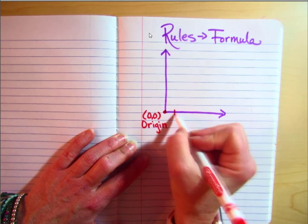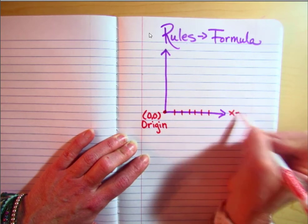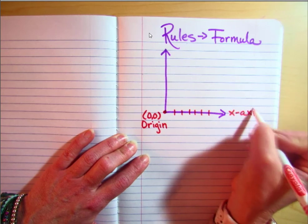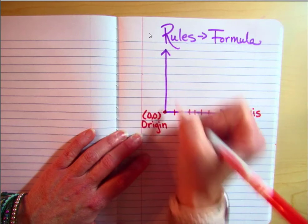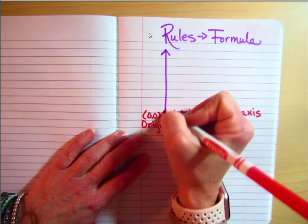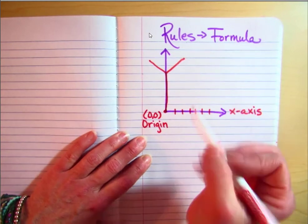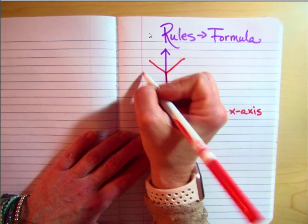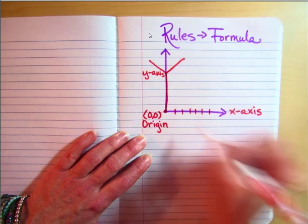Along this line here, this is your x-axis, and this one is your y-axis. I always remember like if you drew it up like this, I could make a big Y with your y-axis. So you need to remember this is your y-axis, this is your x-axis.